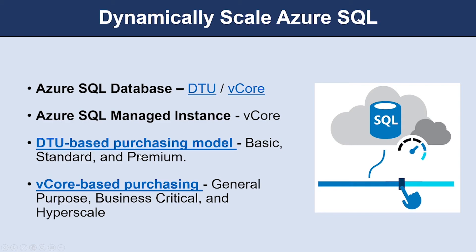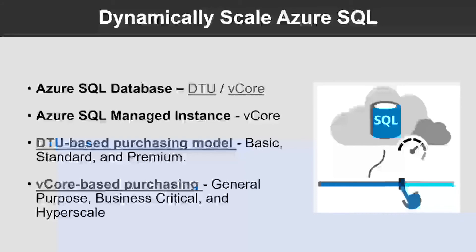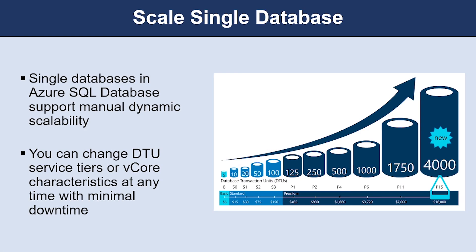The DTU-based purchasing model offers a blend of compute, memory, and IO resources in three service tiers — Basic, Standard, and Premium — to support lightweight to heavyweight database workloads, with each tier providing a different mix of resources plus additional storage. The vCore-based purchasing model lets you choose the number of vCores, the amount of memory, and the amount and speed of storage. It offers three service tiers: General Purpose, Business Critical, and Hyperscale.